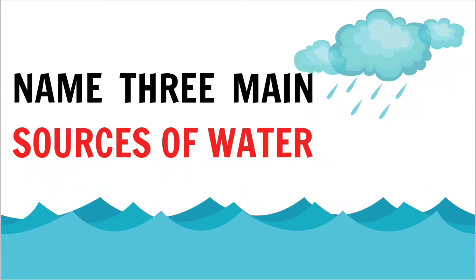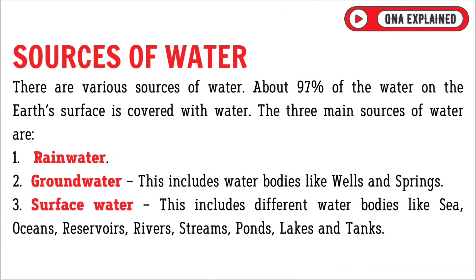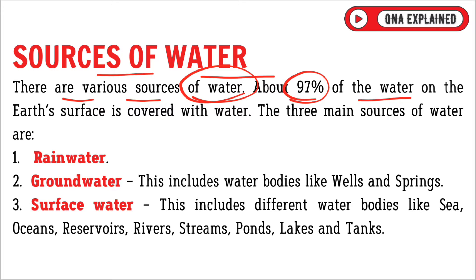Name three main sources of water. There are various sources of water. About 97% of the water on the earth's surface is covered with water.